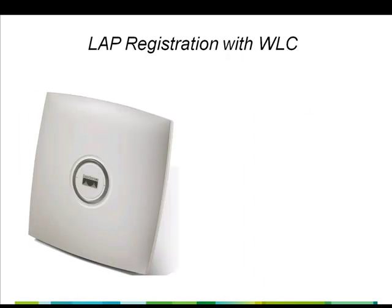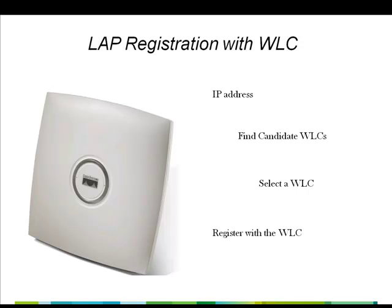The lightweight access point registration process is a four-step process. First, the AP needs to get an IP address. Next, the access point needs to find candidate controllers to which it can register. The third step is to select a controller from the list of candidate controllers. And the final step is to register with the wireless LAN controller. Let us now see how the lightweight access point accomplishes these steps and completes the registration process.